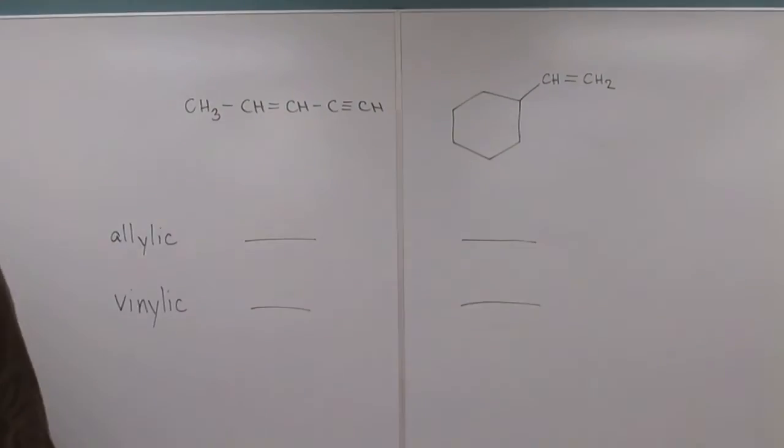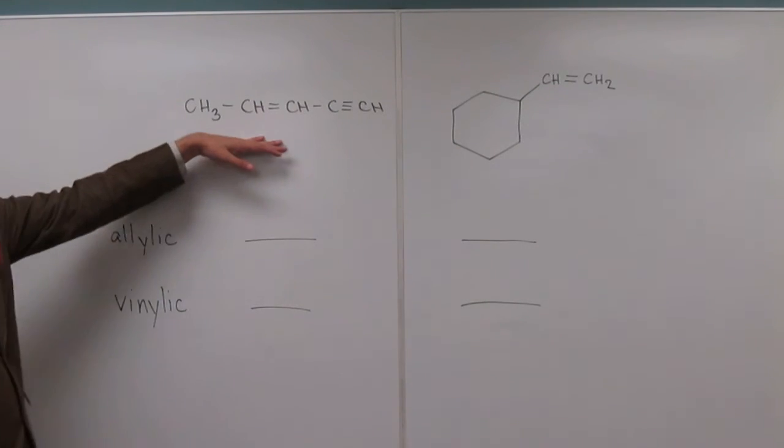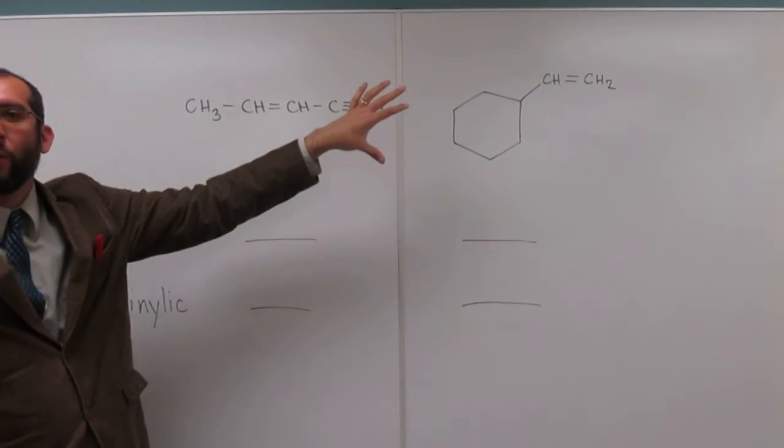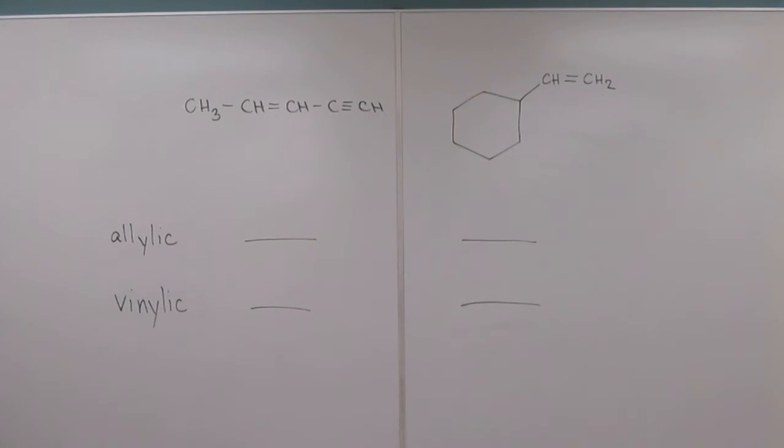So I like to look for the vinylic ones first because I think they're easier to find. So do you guys remember where a vinylic hydrogen is located? Where is that? Connected to the alkene. Yeah, directly on that alkene or the double bond. So this molecule here has that triple bond in there for this particular question to kind of throw you off. So don't get thrown off by it because that's what we're looking at is just the alkene portion.